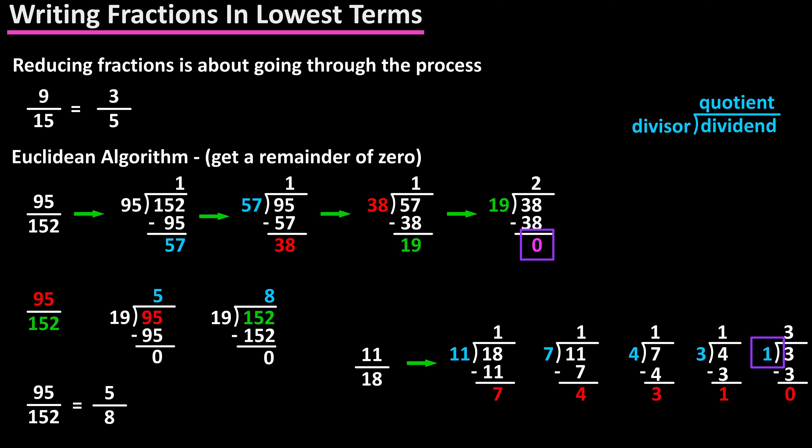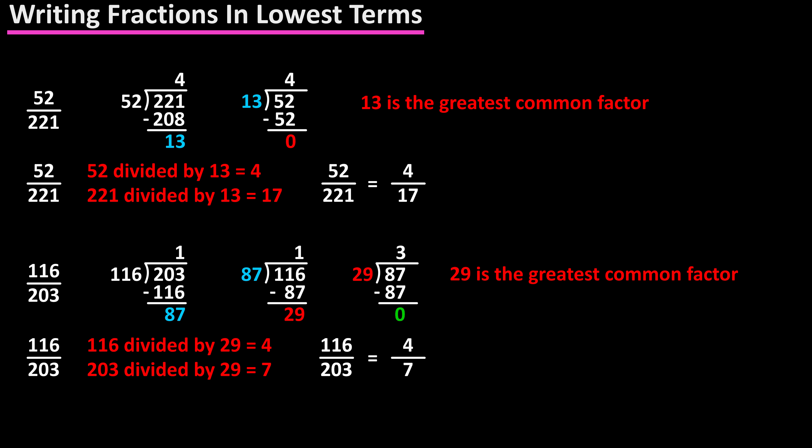If you go through this process, as you see here in this example of 116 over 203, and you have 1 as the divisor that gets the remainder of 0, then there is no greatest common factor, or 1 is the greatest common factor, and the fraction cannot be reduced further. Here are a few more examples written out of reducing fractions to lowest terms.